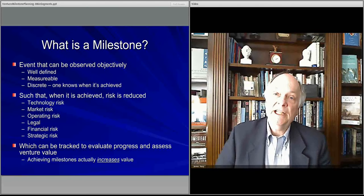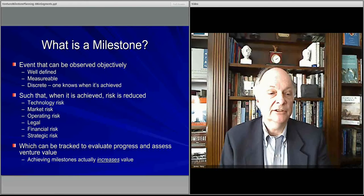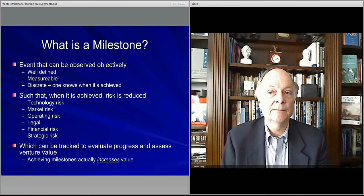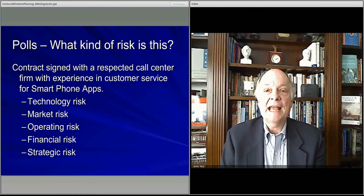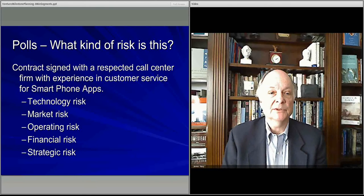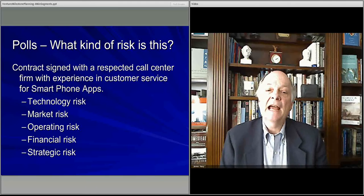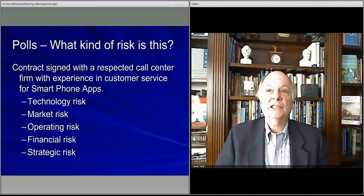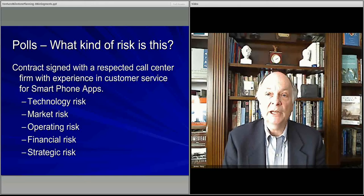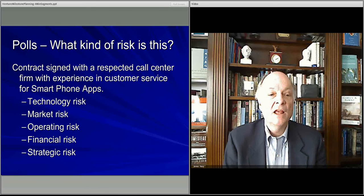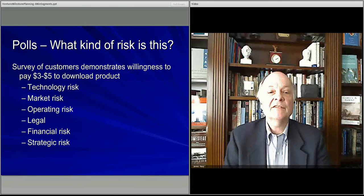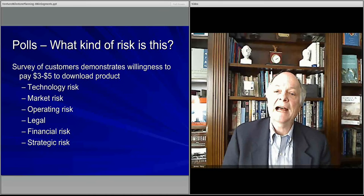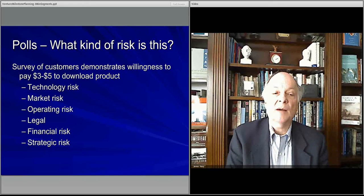Let's look at a couple of quick examples and think about what kind of risk is taken out. First: you've signed a contract with a call center experienced in customer service that works with smartphone apps. Once you've signed that contract and know the cost, what kind of risk have you taken out of your business? There'll be a question on screen for you to answer. Next example: customers demonstrate their willingness to pay $3 to $5 to download your app. Is that technology risk, market risk, operating risk, legal risk, financial risk, or strategic risk? Answer the question in the video.